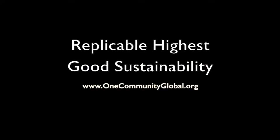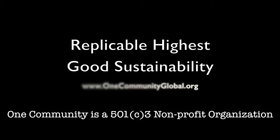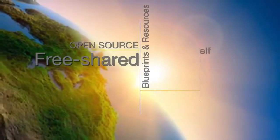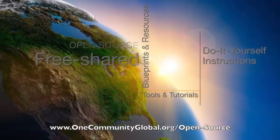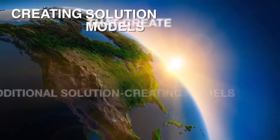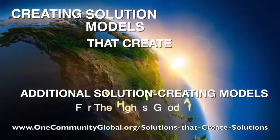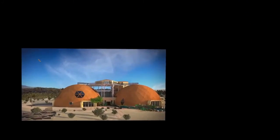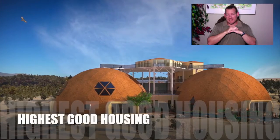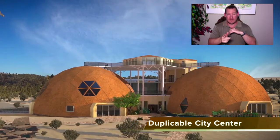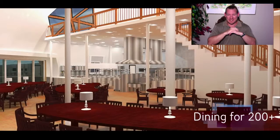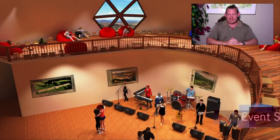Replicable Highest Good Sustainability — One Community Weekly Progress Update Number 223. One Community is a 501c3 non-profit organization creating open source and free shared blueprints, resources, tools, tutorials, and do-it-yourself instructions for highest good living. My name is Jay Sabel, and I'm the Executive Director of the One Community 501c3 non-profit. This is our Weekly Progress Update Number 223, July 2, 2017 edition. Today I'd like to talk about Replicable Highest Good Sustainability.